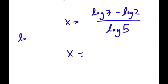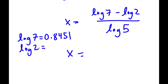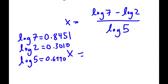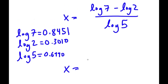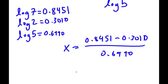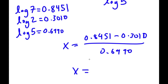So log 7 is equal to 0.8451, log 2 is equal to 0.3010, and log 5 is equal to 0.6990. So x is equal to 0.8451 minus 0.3010 all over 0.6990, meaning x is equal to 0.5441.